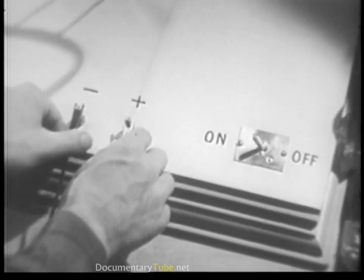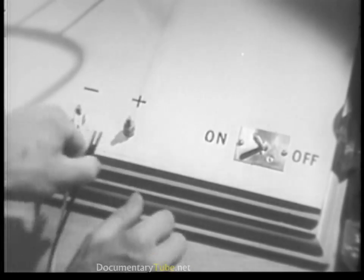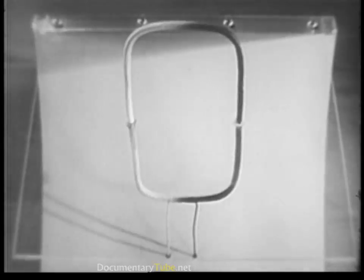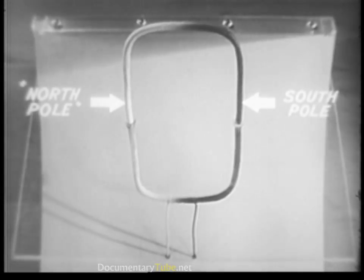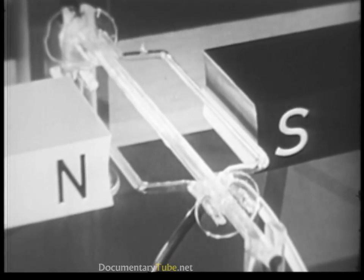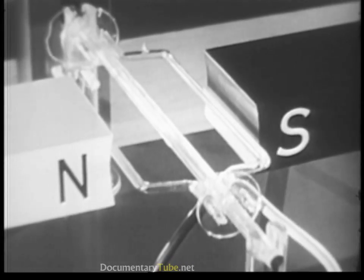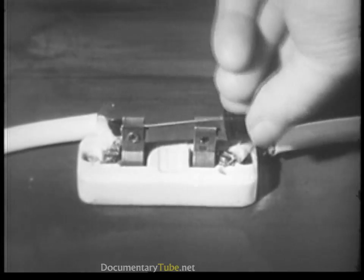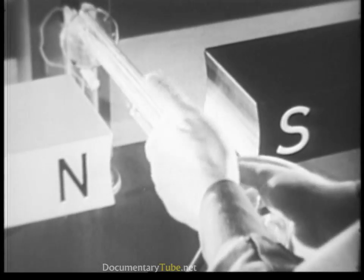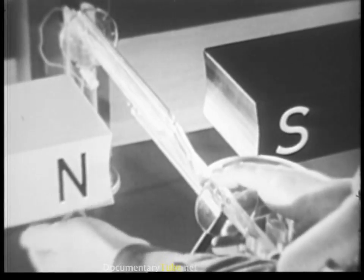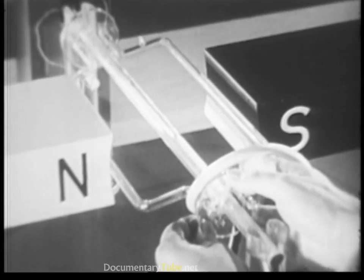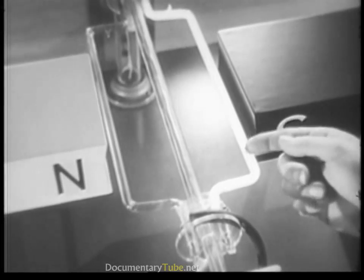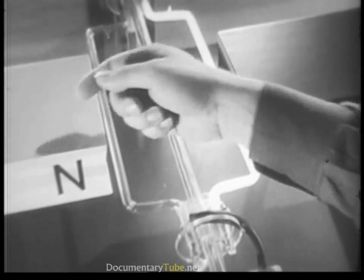So, if we change the direction of the current, the poles automatically change positions. This is going to be the north pole of the loop as soon as current begins to flow. When we place the north pole of the wire loop near the north pole of the bar magnet and turn on the current, the loop starts to rotate because its north pole is repelled by the north pole of the bar magnet.